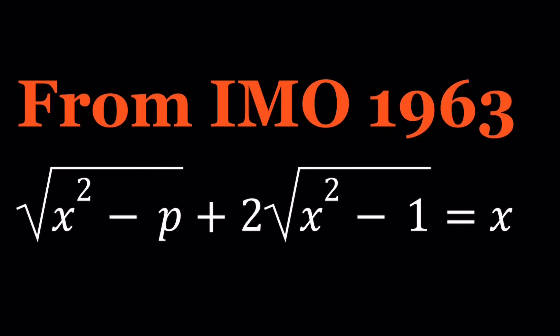This is a radical equation: the square root of x squared minus p, plus two times the square root of x squared minus one, is equal to x. Here p is a parameter, so as p changes, the solutions change. We have to check a few things.